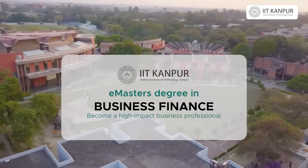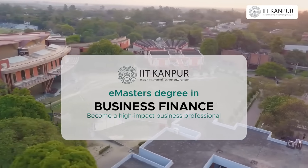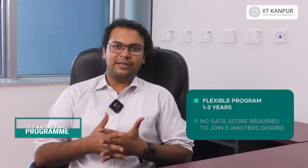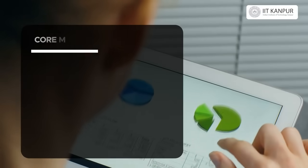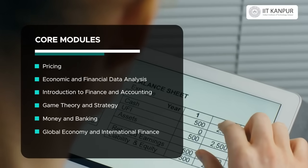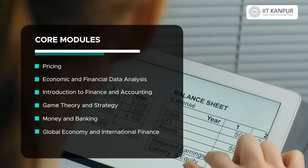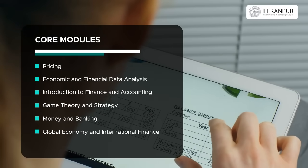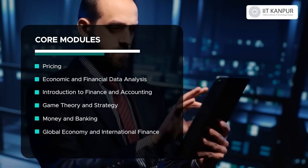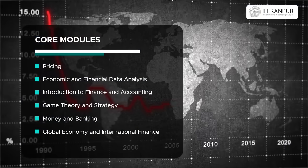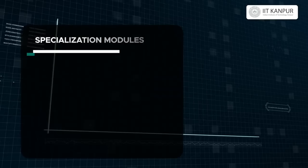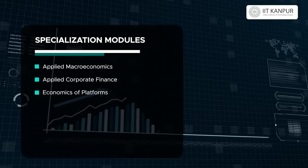The course is structured into different quarters, and at a quicker pace you can complete the whole program in four quarters. Each program has four core courses covering finance and accounting, money and banking, pricing, game theory, statistics, data analysis, and global economy and international finance.